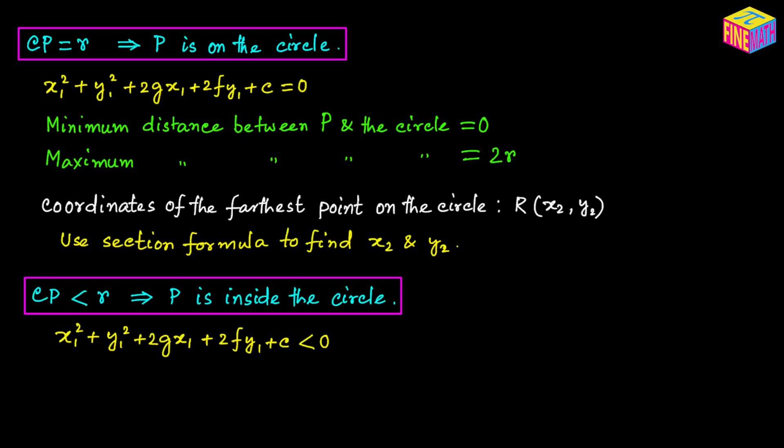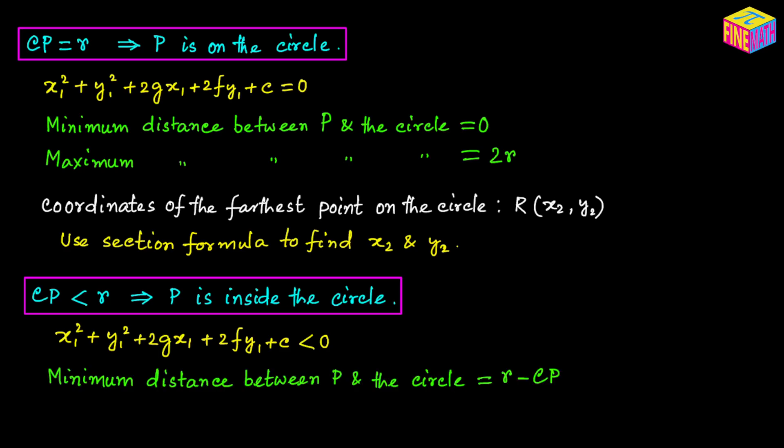When P is inside the circle, the minimum distance between P and the circle is PQ = CQ − CP = R − CP. The maximum distance is PR = CP + CR = CP + R. We already know R and CP, so both distances can be easily calculated.